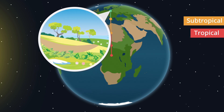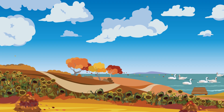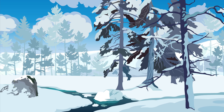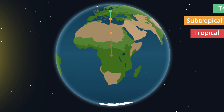Further north it's cooler again. Here we have four distinct seasons: spring, summer, autumn, and winter. The vegetation is primarily woodland — broadly for pine trees. A giant belt of pine forest spreads from Scandinavia over Asia and all the way across the North American continent. This is the temperate climate zone.